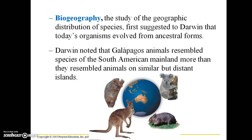Hi again students! Welcome to the second part of the chapter 13 lecture. I just finished explaining how fossils were one line of evidence for evolution, and I'm going to move on to the next line of evidence, which is biogeography. This can be defined as the study of the geographic distribution of species, and it first suggested to Darwin that today's organisms evolved from ancestral forms.